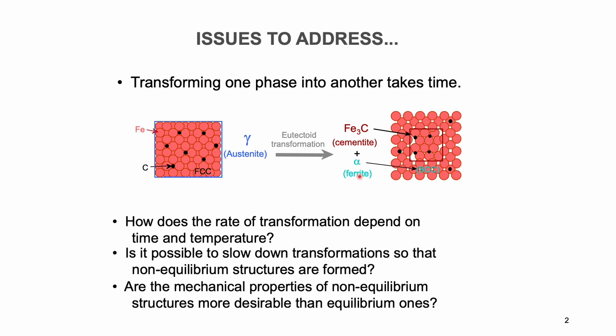How about the detailed transitions inside? We understand that phase transformation depends on time and temperature. So when we modify the processing condition — either time or temperature, or both — can we get different structures, or link with different properties? What we try to emphasize here is: can we get a non-equilibrium structure? Is this structure better in terms of mechanical properties? That's the question we try to answer in this lecture.